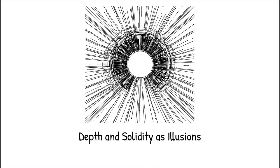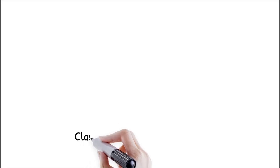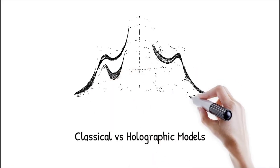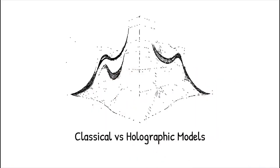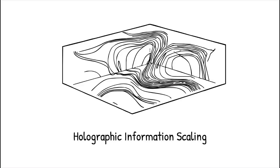In black hole physics, the holographic principle implies that all information swallowed by the hole is stored on its two-dimensional event horizon, like watching a lifelike 3D movie projected from a 2D film reel. Classical physics assumes that the information content of a region of space scales with its volume, so more space means more bits of data. The holographic principle, by contrast, asserts that the maximum information in a volume actually scales with the area of its boundary surface. This reversal implies that all the details inside a region can be fully described by data on its edges.